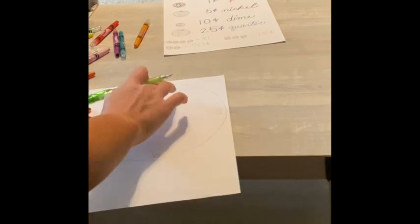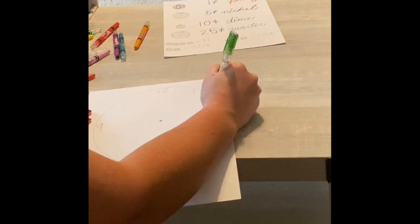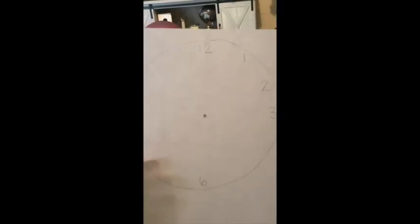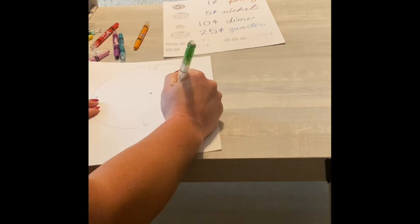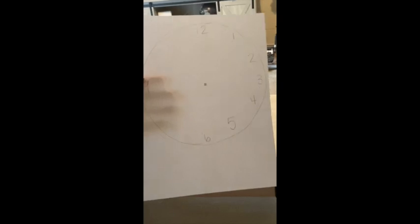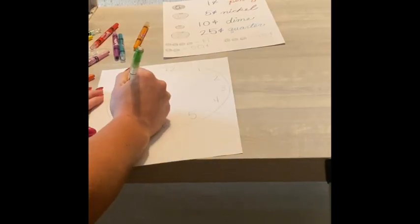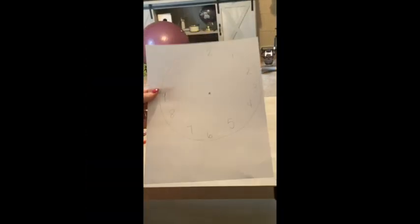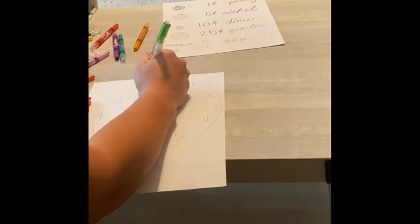Now, in between the 12 and the 3, we're going to put the numbers 1 and 2. Just like this. Okay. In between the numbers 3 and 6, we're going to put the numbers 4 and 5. Just like this. In between the 6 and the 9, we're going to put the numbers 7 and 8. And in between the 9 and the 12, we're going to put the numbers 10 and 11.